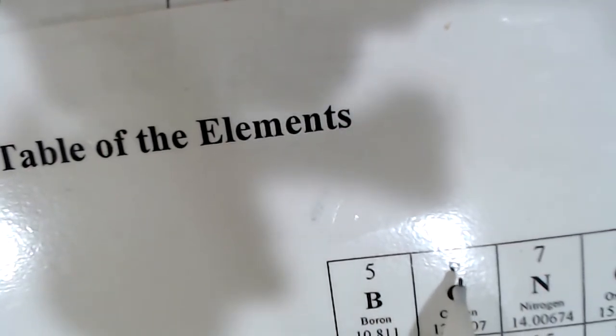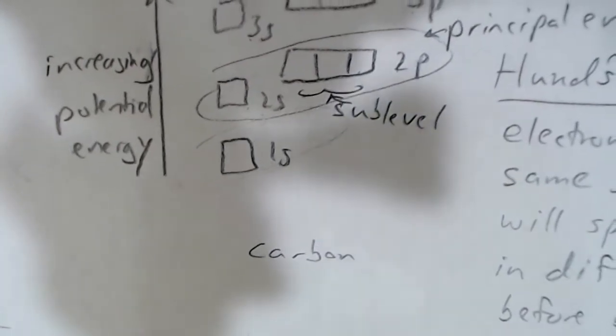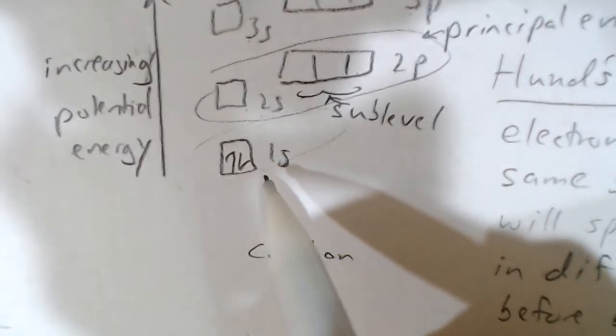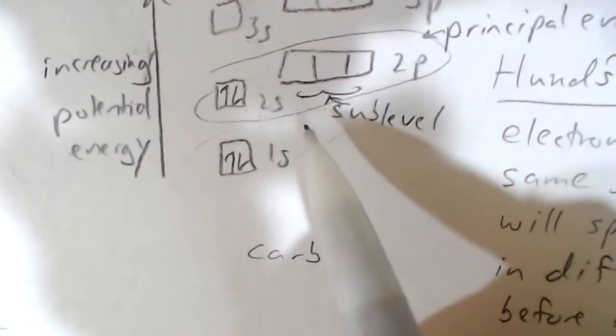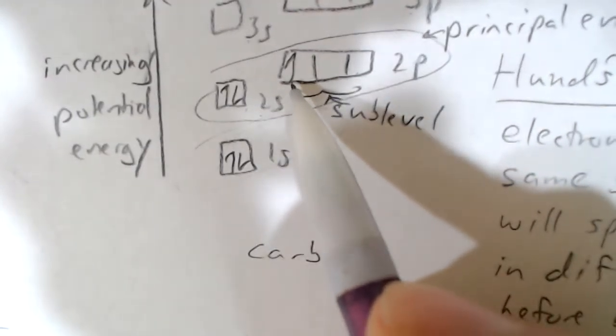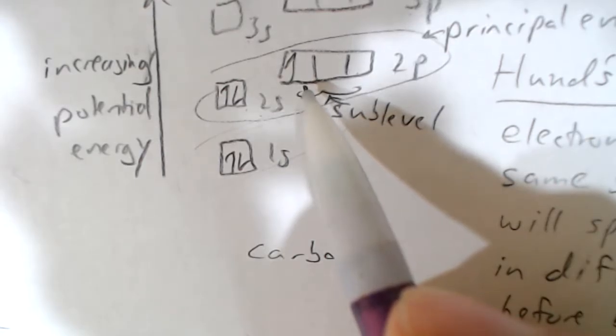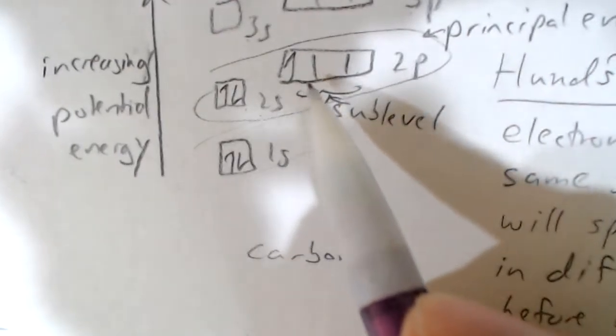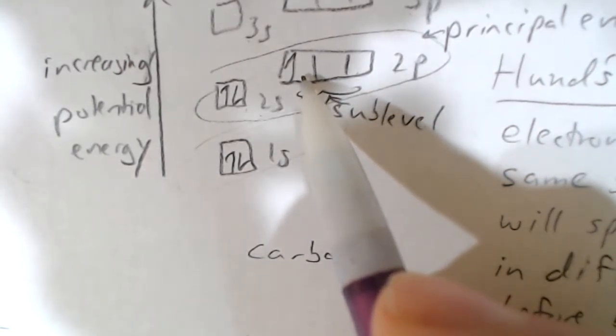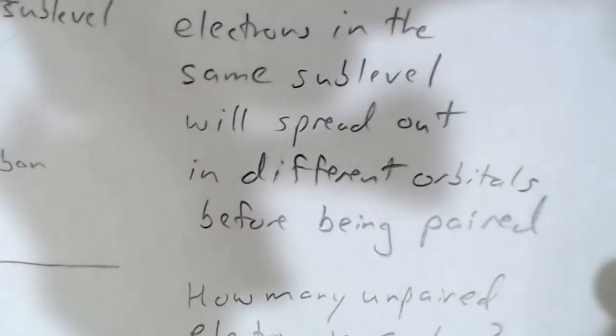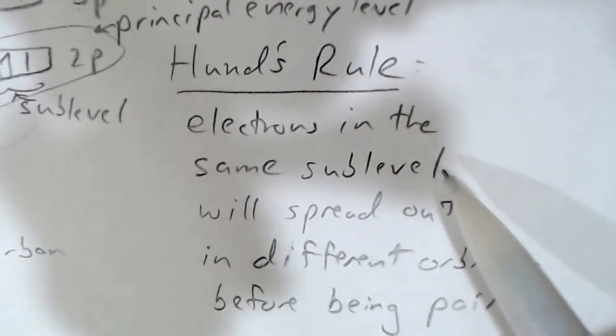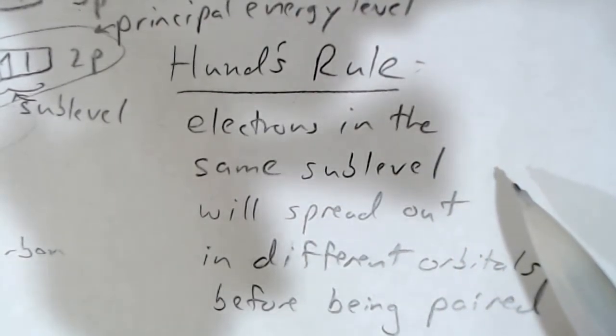What if we had carbon? That would have six electrons. Its atomic number is 6. We would put two electrons into the 1s, and then two electrons into the 2s, and then an electron into this orbital. That's 5. And now add one more. The next one will go not in that orbital, but in one of the other orbitals. This is according to Hund's rule. Hund's rule says that electrons in the same sublevel will spread out into different orbitals before being paired up.